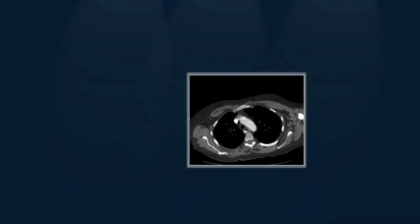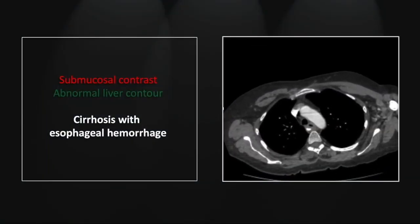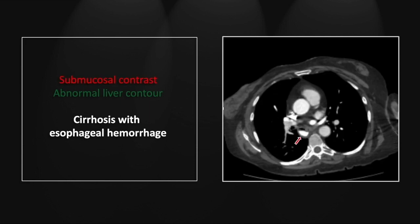Our next case is a case of cirrhosis with active esophageal hemorrhage. There are foci of submucosal contrast denoting active extravasation, possibly below the level of the mucosa, here in the upper esophagus and in the mid-portion as well.